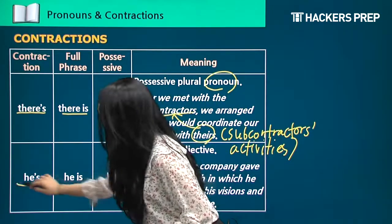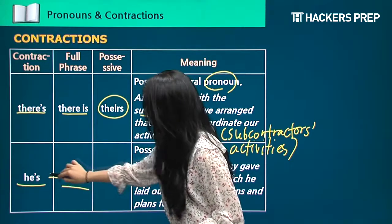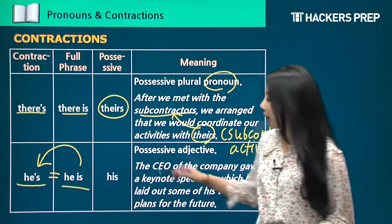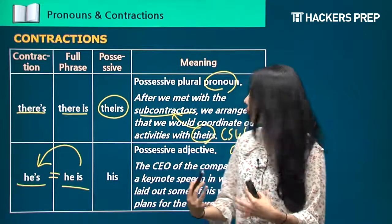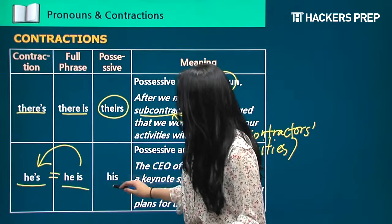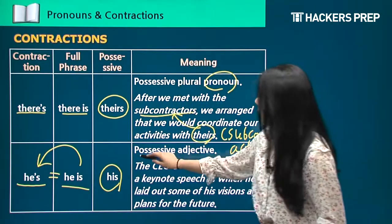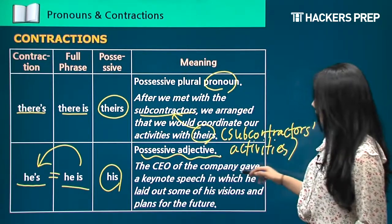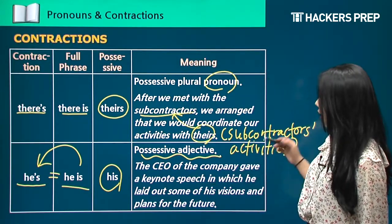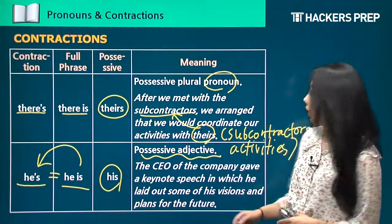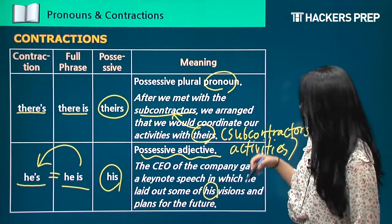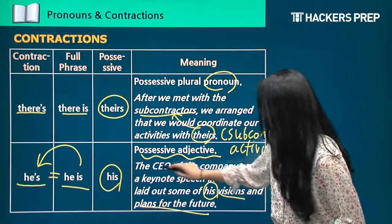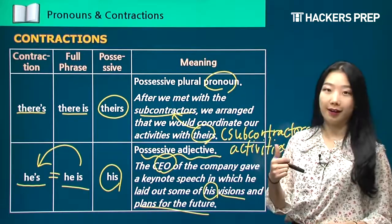What about 'he's'? That's 'he is,' and with an apostrophe it becomes the contraction 'he's.' The possessive form is 'his' — a possessive adjective. For example: 'The CEO of the company gave a keynote speech in which he laid out some of his visions and plans for the future.' 'His' refers to the CEO — the visions and plans belong to the CEO of the company.